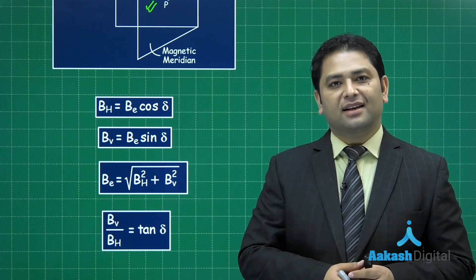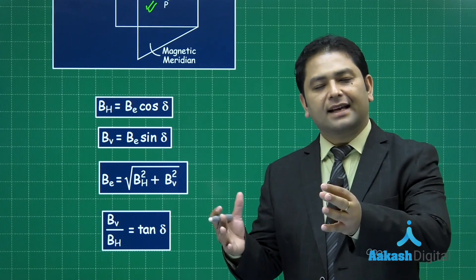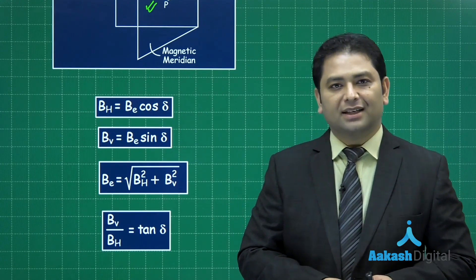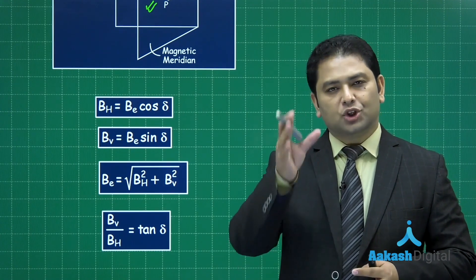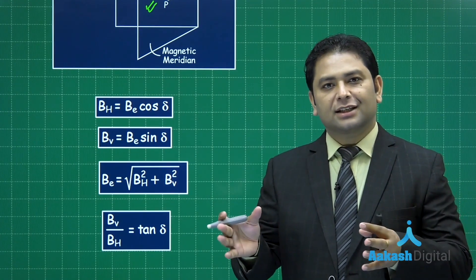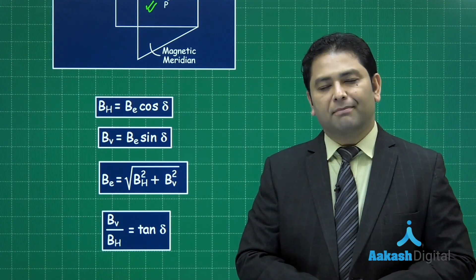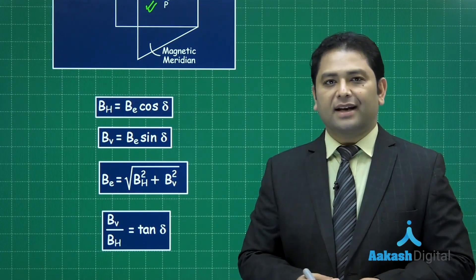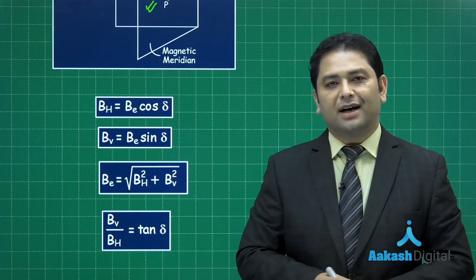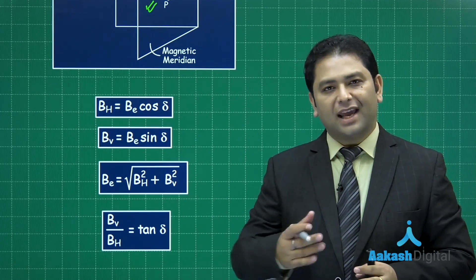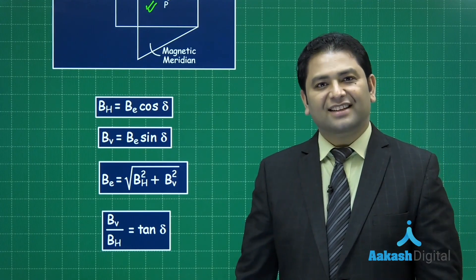There's one interesting thing: to measure dip accurately you must be at the magnetic meridian. But what if you stay in a plane other than the magnetic meridian? The dip circle will still show a deflection, but that deflection will not be equal to the true dip — it is called the apparent dip. In the next segment, I'm going to talk about apparent dip and the numericals corresponding to dip.